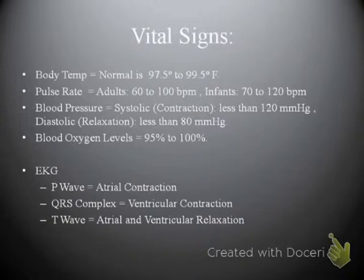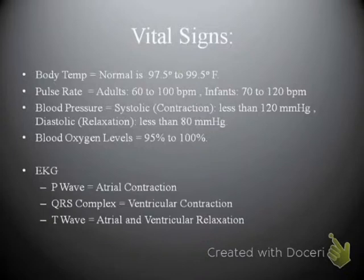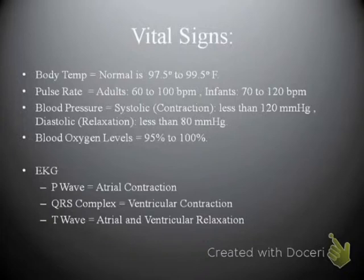Vital signs help paint a complete picture of the patient. Normal body temperature is 97.5 to 99.5 degrees Fahrenheit — though 98.6 is commonly cited, you can go up or down 0.9 degrees and still be within normal range. Adult pulse rate is 60 to 100 beats per minute; infants have a more rapid heartbeat of around 70 to 120 BPM. Normal systolic blood pressure should be less than 120 mmHg and diastolic less than 80 mmHg.